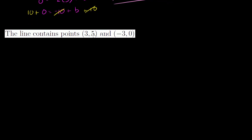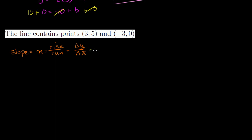The line contains the points (3, 5) and (-3, 0). Just like the last problem, we start by figuring out the slope. The slope m is the same as rise over run, which is change in y over change in x.